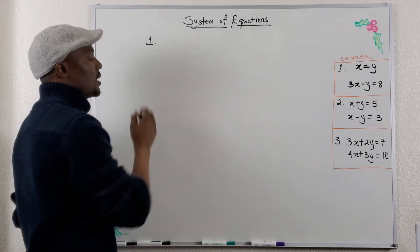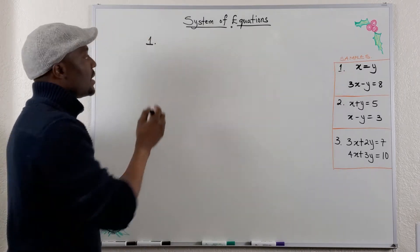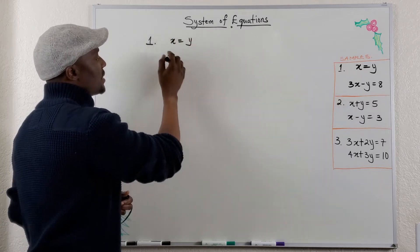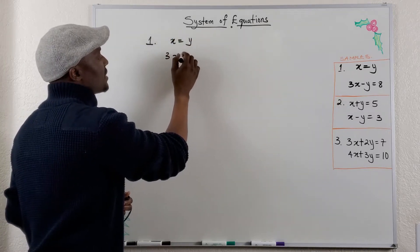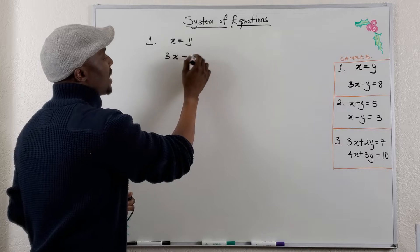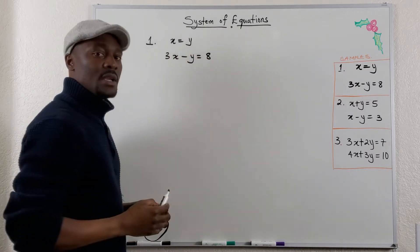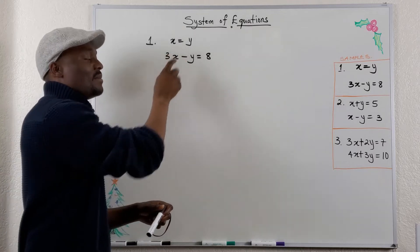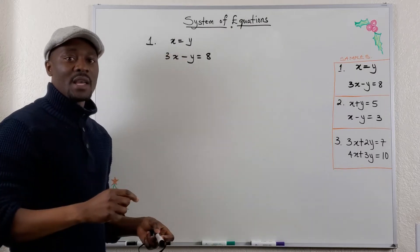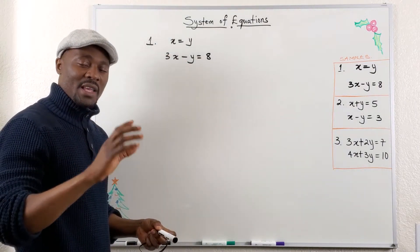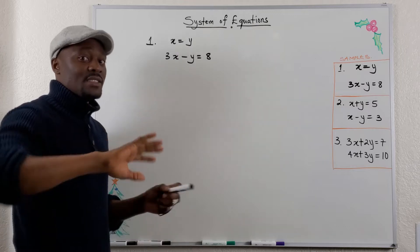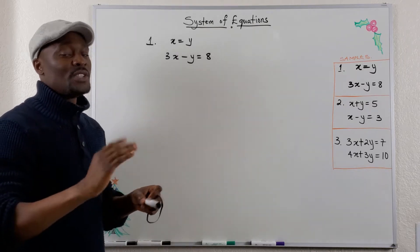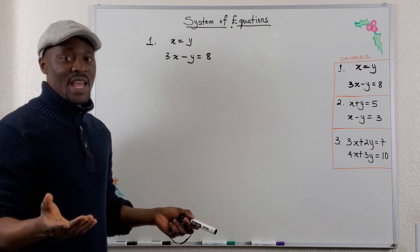First example, number one. It says that x is equal to y, and the second equation says 3x minus y is equal to 8. In this case, they already told you that x is the same thing as y. So instead of writing y, you could plug in x, and instead of writing x, you could plug in y. Whichever you choose will lead you to the answer.